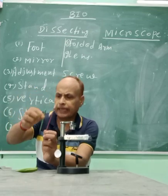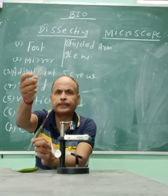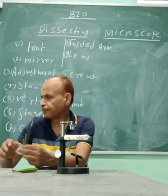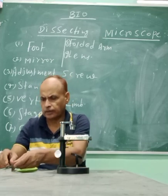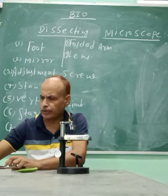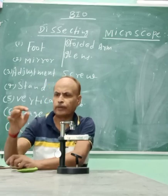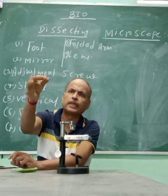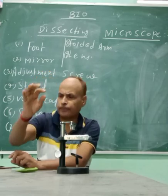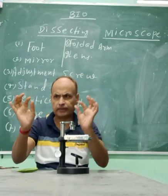This is a brush, and this is a forceps. These are the slides, and this is a petri dish in which water is kept. We need water so that what we observe does not dry out. This small square, very thin piece of glass is called the cover slip. This rectangular piece is somewhat thicker.